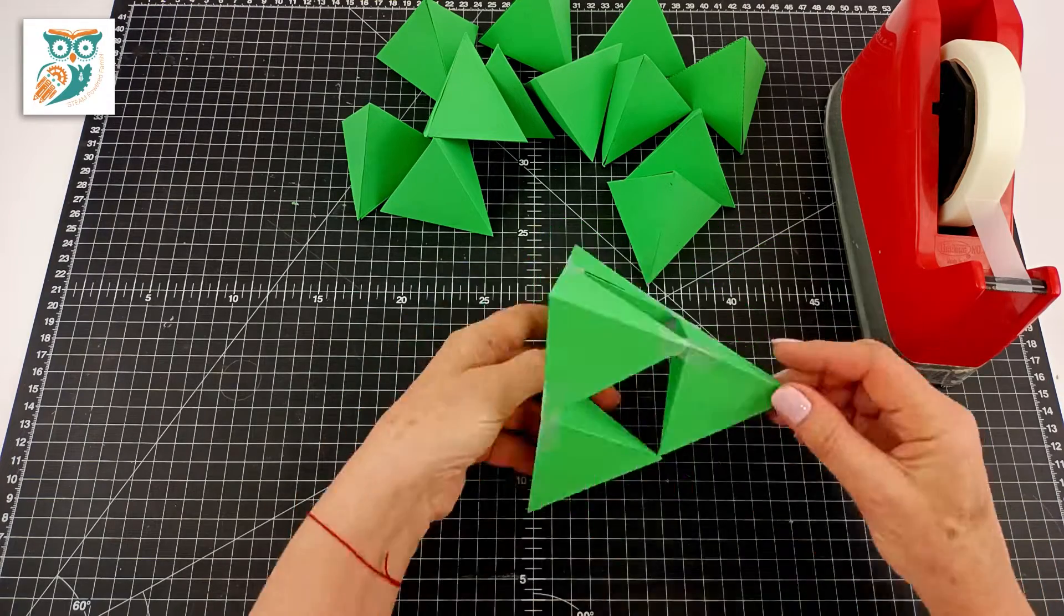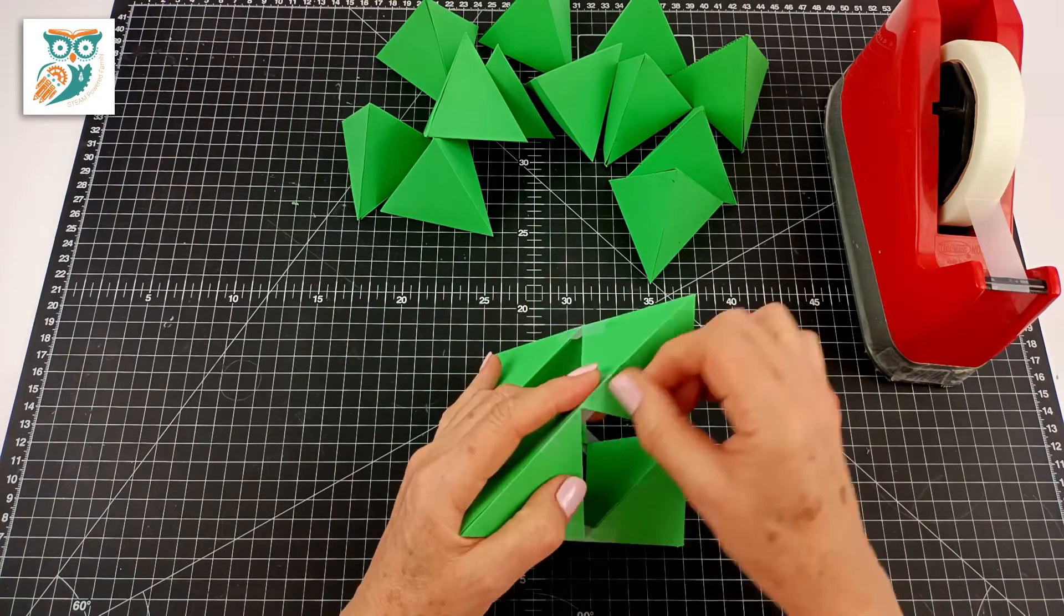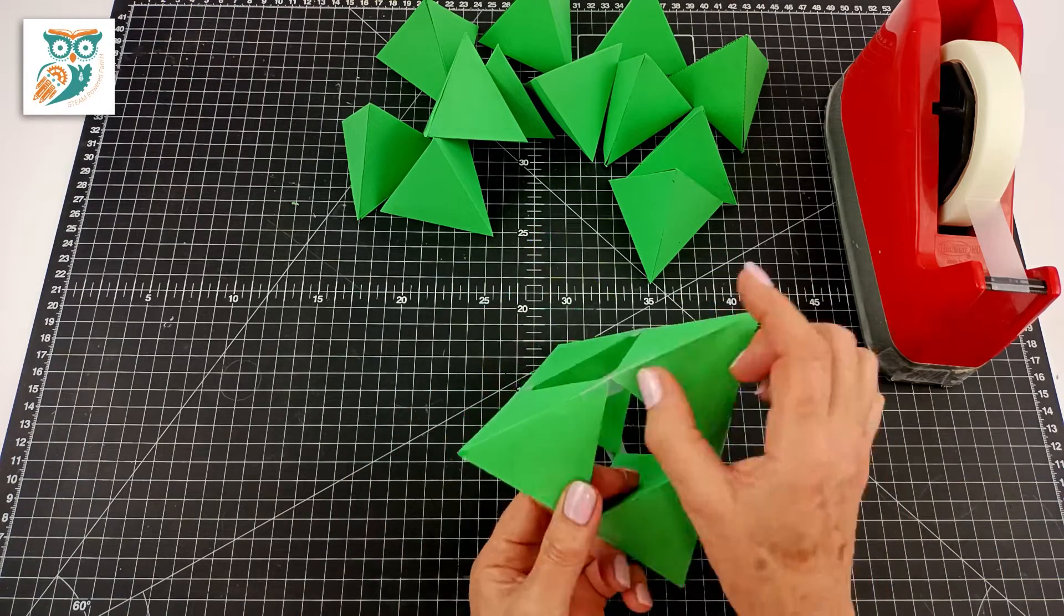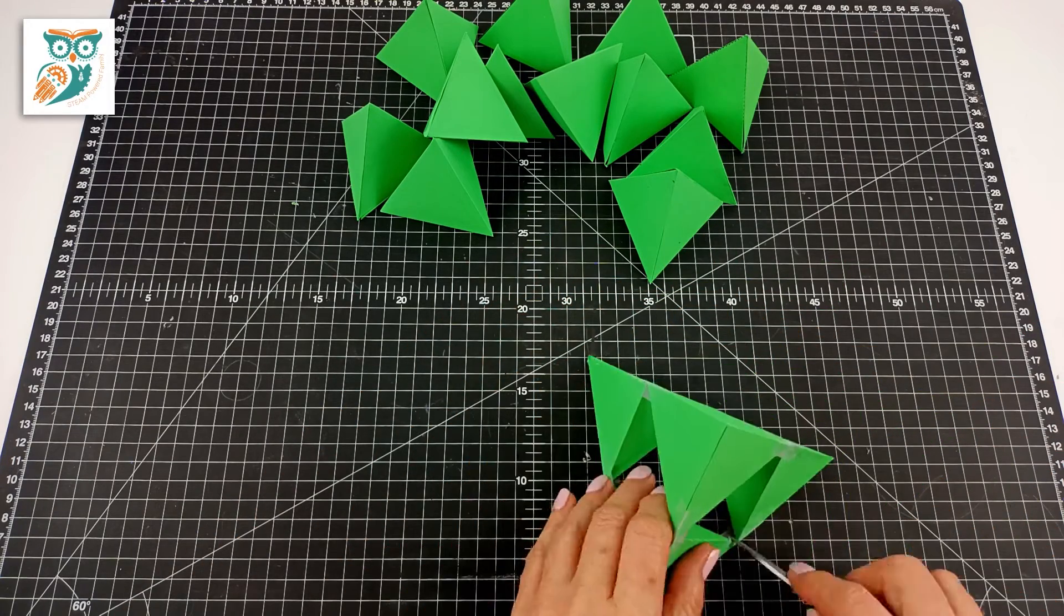And you see we're just putting the corners together and then taping the corners. So there's four in each one creating a new triangular pyramid.